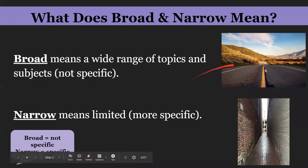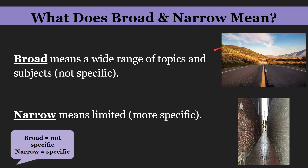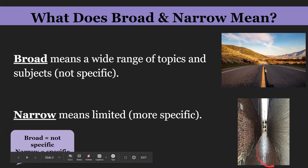If you want to think about it, this is broad because it shows a wide range of the road, while narrow would be like this alleyway because it is more narrow in width. So broad is not specific and narrow is specific.